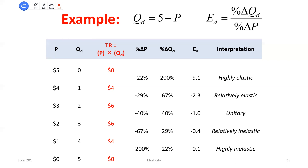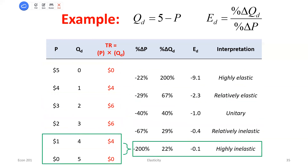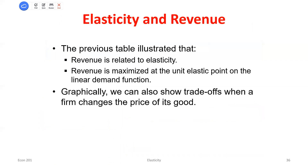To summarize visually: when we had elastic demand, lowering the price caused total revenue to go up. When we're on the inelastic portion and we continue to lower the price, total revenue is actually decreasing. At the unit elastic portion, if we're moving the price somewhere in that range, total revenue has been maximized — it's as high as we can get.